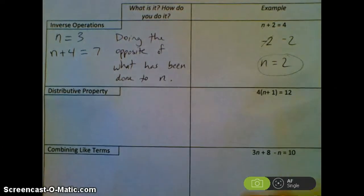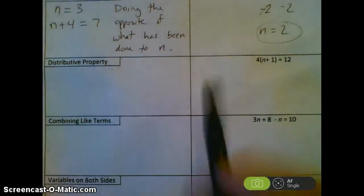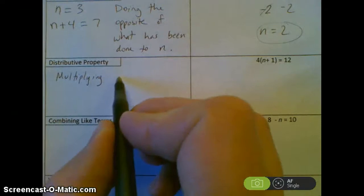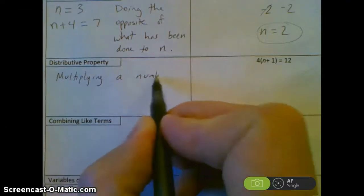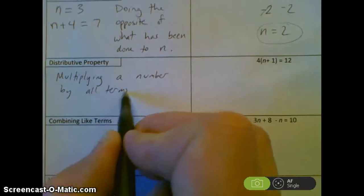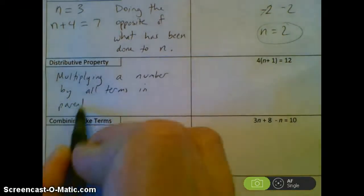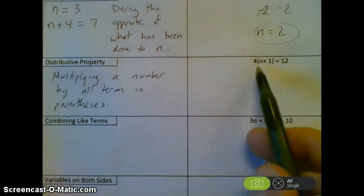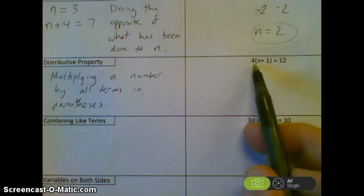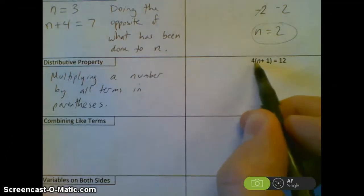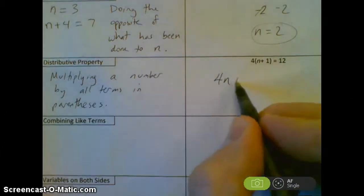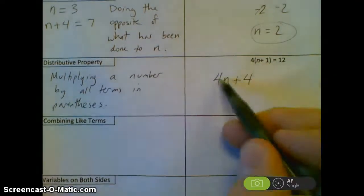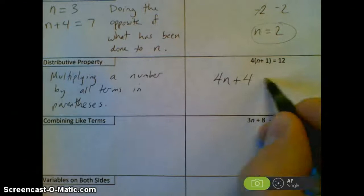Now the distributive property. The distributive property is multiplying a number by all terms in parentheses. So it applies when you see something like 4 times (n plus 1) equals 12. You multiply 4 by n to get 4n, the sign stays the same, and 4 times 1 is 4. The 12 stays the same.